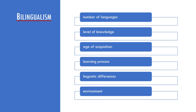People typically know more than only their native language. Etymologically speaking, bilingualism means the knowledge of two languages, but in psycholinguistics and other fields, people who know more than one language are commonly called bilinguals. In this course we will therefore use bilingualism as a general term for the knowledge of more than one language.